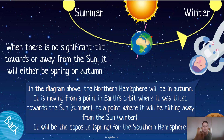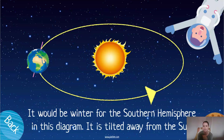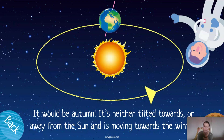As we rotate, that's how we work our way through the seasons depending on our position facing the sun. In this diagram, what season will it be for the southern hemisphere? It would be winter for the southern hemisphere because it's at the furthest point tilted away from the sun. And now in this next diagram, what season will it be for the southern hemisphere? It would be autumn, because we've gone from winter — it's neither tilted away nor towards the sun — meaning it's now moving toward winter.